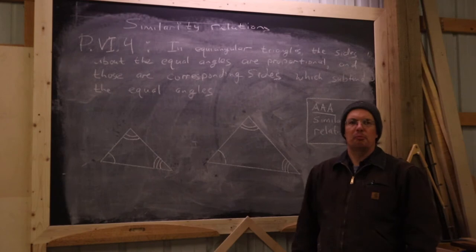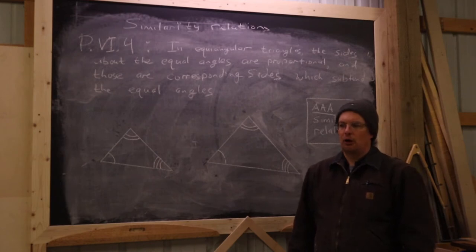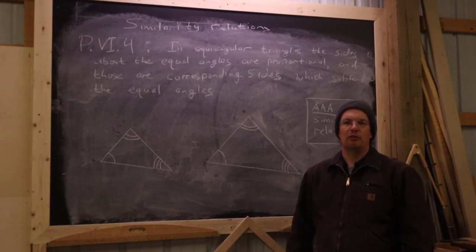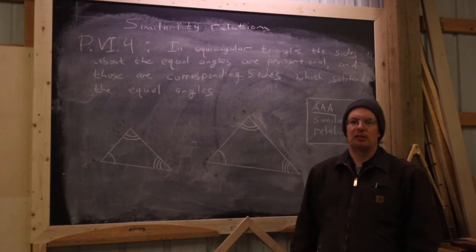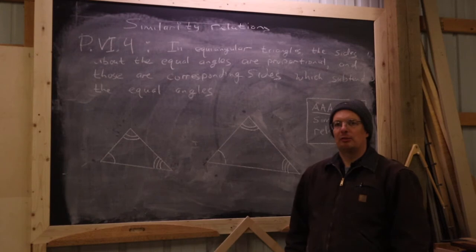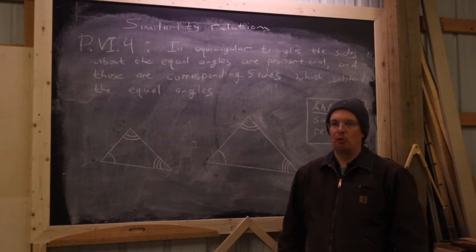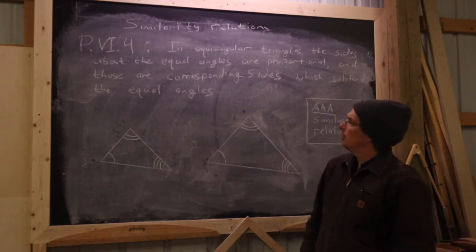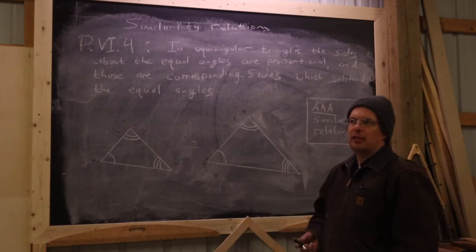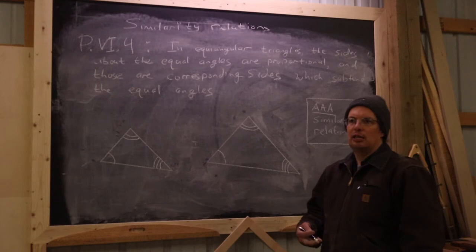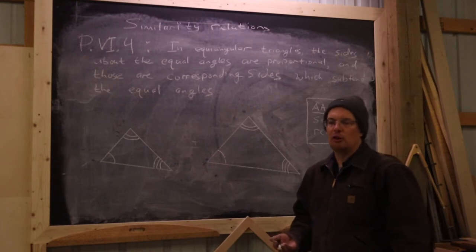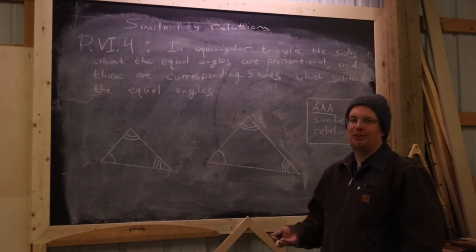The next four propositions from Book Six give us more efficient ways of determining when two triangles are similar. It's worth reminding ourselves what similarity means: by definition, two triangles are similar if their corresponding angles are all equal to one another and their corresponding sides are all in proportion. It turns out that knowing all of that information is more than we need to determine that two triangles are similar.